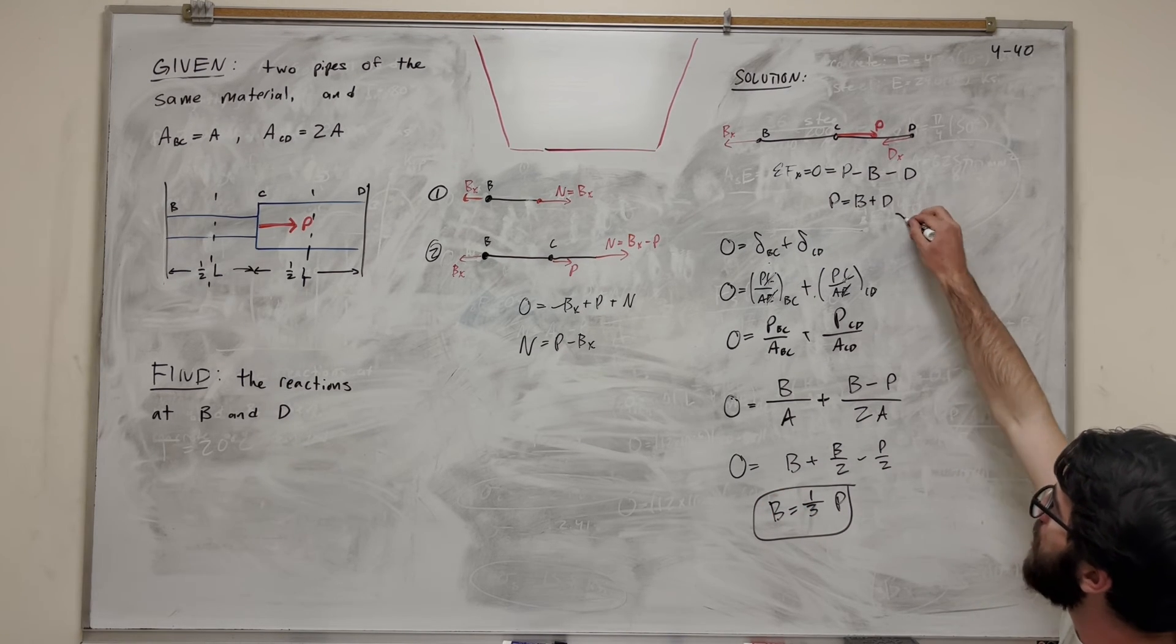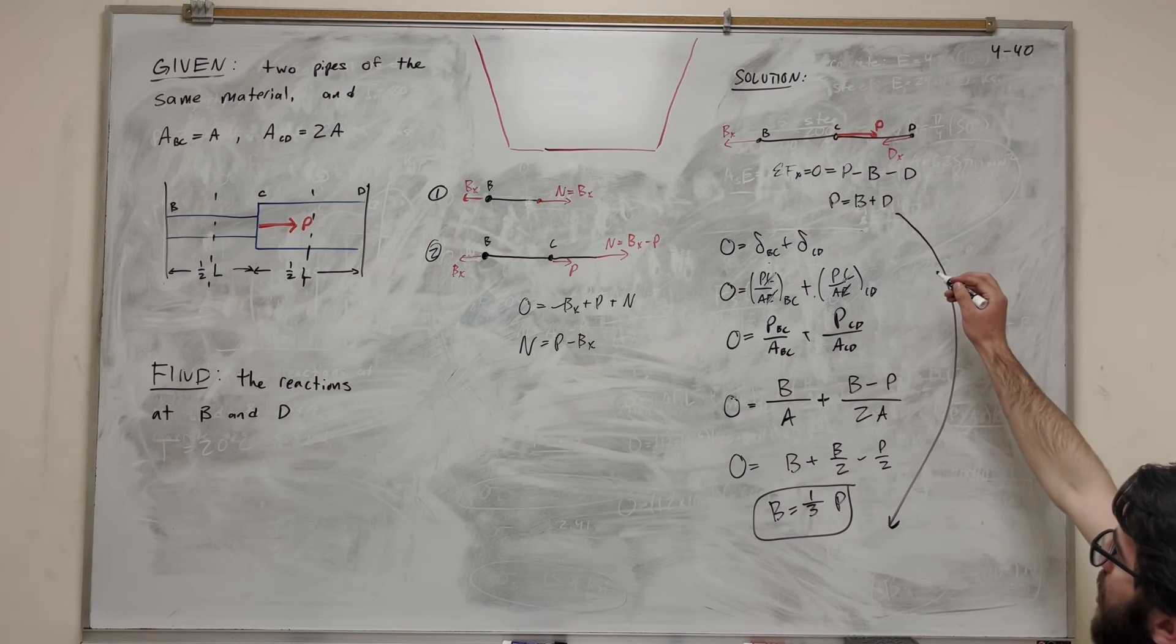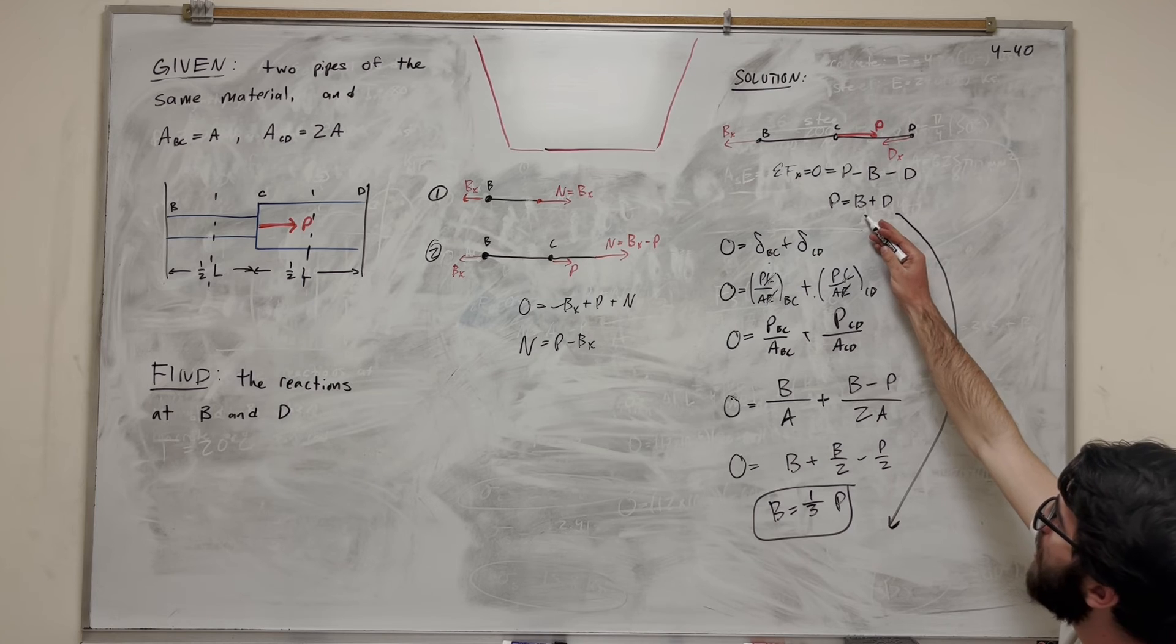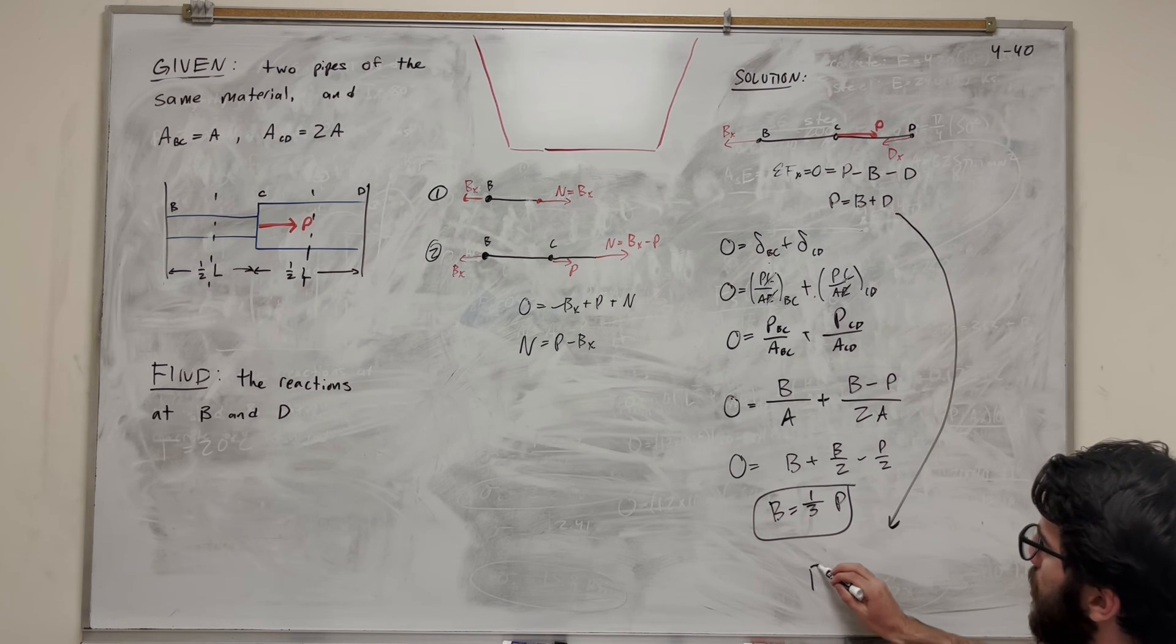So now if we want to find D, we're just going to take that equation that we wrote way earlier, sum of the forces in the X. And if you plug in B as 1 third of P, then you're going to get that D is equal to 2 thirds of P.